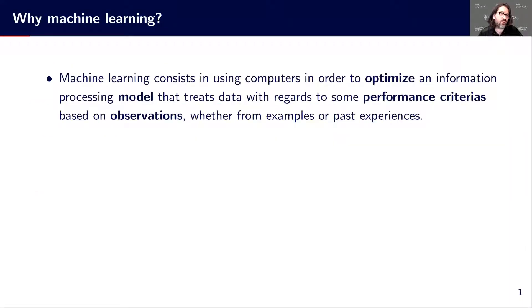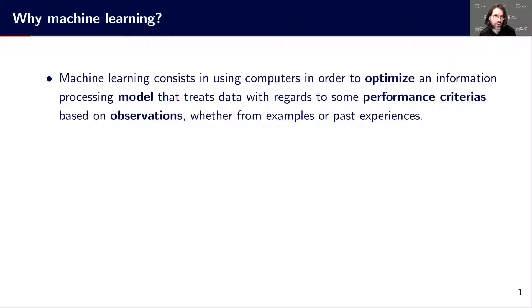So why machine learning? What is exactly machine learning? In machine learning we want to develop methods in computers that are useful for optimizing. The point is to optimize a model. So we have an information processing model. This model is not specified for a task, it is a general model that we want to optimize in order to be able to process data. And that processing of data should be optimized in order to achieve good results on some performance criteria according to the observations.